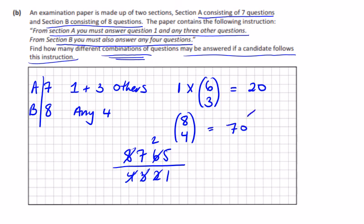And 20 times 70 is 1400, which is the amount of different combinations of questions that can be answered.